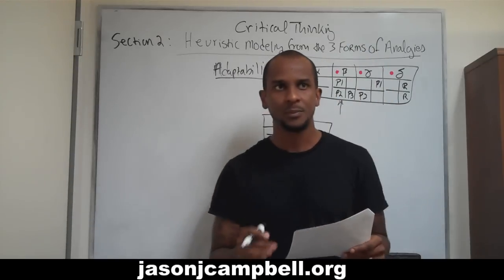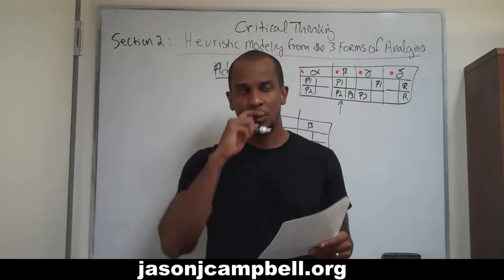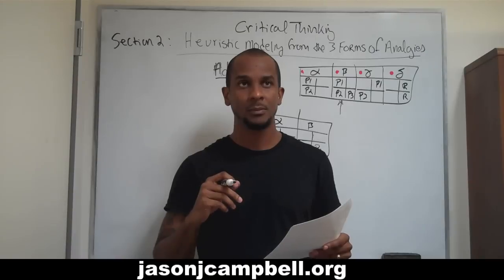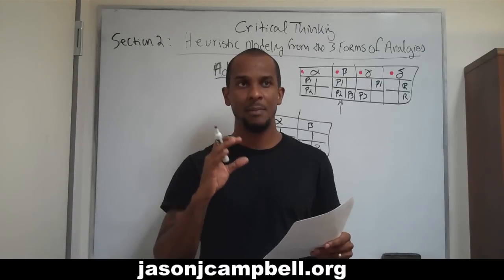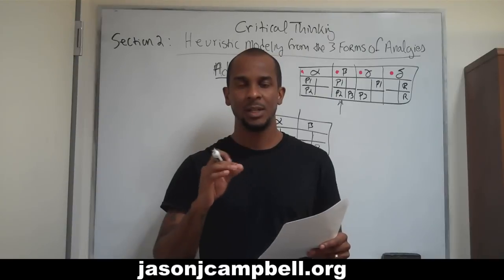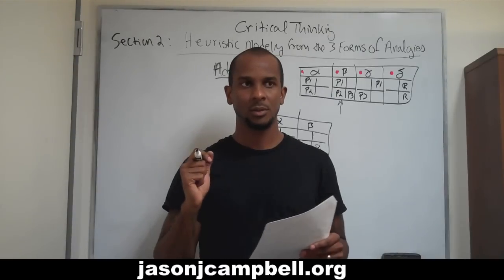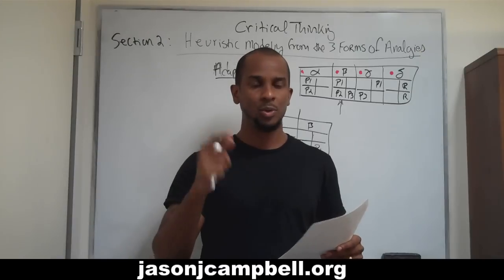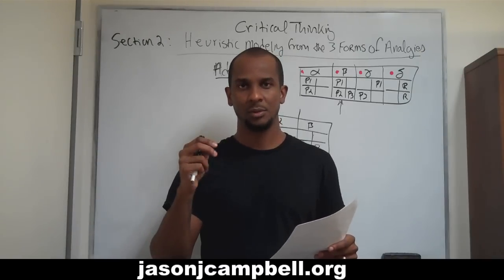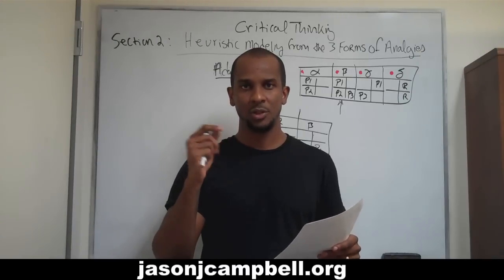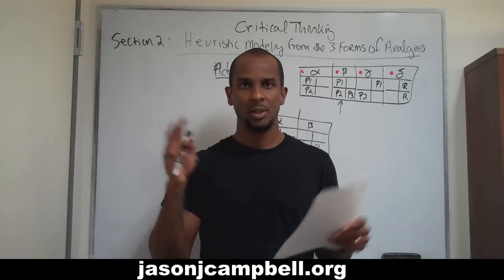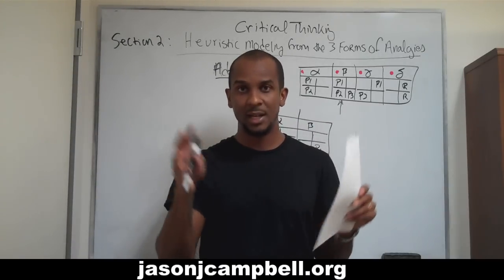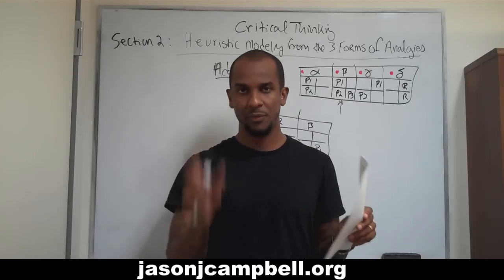I'll give you a basic example. If both Tom and Tim decide to wear red shirts, blue pants, and white shoes, you can see how close they are in relation — positive analogical relations, three for three.